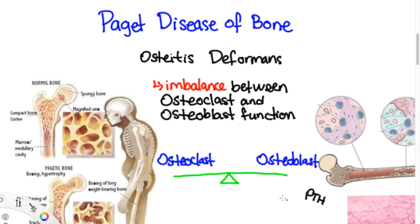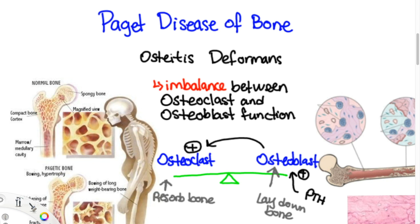PTH is a hormone secreted by the parathyroid gland. It stimulates osteoblasts, which then go and stimulate osteoclasts. Typically, osteoclasts do not work without the permission of osteoblasts.